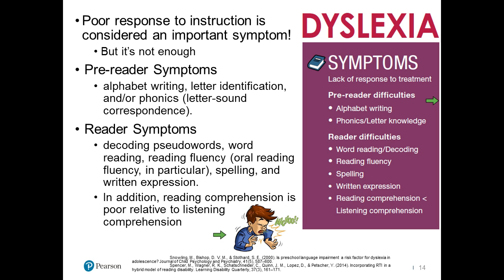Just a lack of response to intervention or to proper instruction is not sufficient to meet this criteria. We break it down in terms of pre-reader and reader symptoms, because the development of reading occurs prior to actually becoming a reader. Pre-reader symptoms include difficulties with alphabet writing, letter identification, and phonics. At the reader level, we see difficulties with decoding pseudowords, word reading, reading fluency, oral reading fluency in particular, spelling, and written expression. Reading comprehension is oftentimes relatively poor compared to listening.